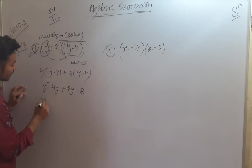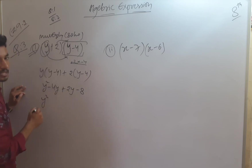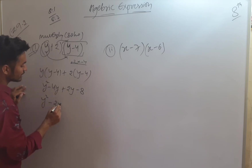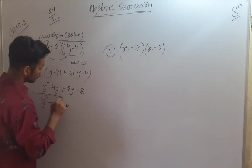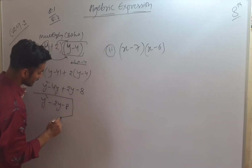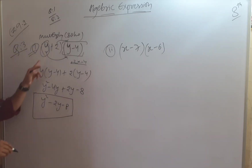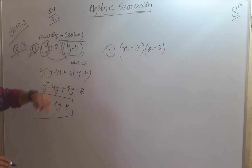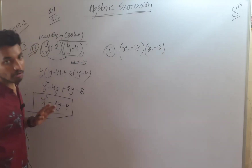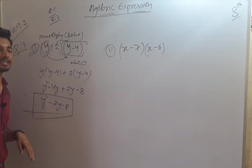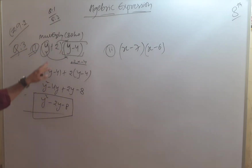So we have y² minus 4y plus 2y, which gives minus 2y. Then we have minus 8. This is the final solution. For (y+1)(y-4), opening the bracket, the solution is y² minus 2y minus 8.